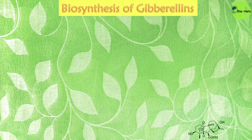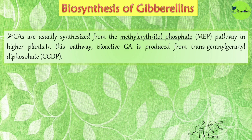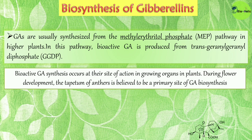Now, how does gibberellin biosynthesis occur? Gibberellins are usually synthesized from the MEP pathway, or methyl erythritol phosphate pathway, in higher plants. In this pathway, bioactive gibberellins are produced from trans-geranylgeranyl diphosphate, or GGDP. The biosynthesis occurs at the site of action in growing organs; during flower development, the tapetum of anthers is believed to be a primary site of GA biosynthesis.